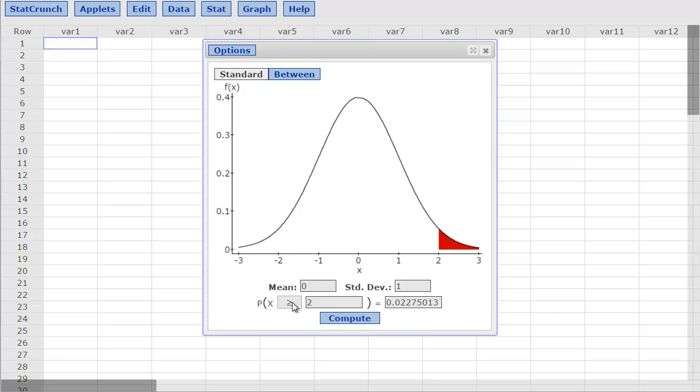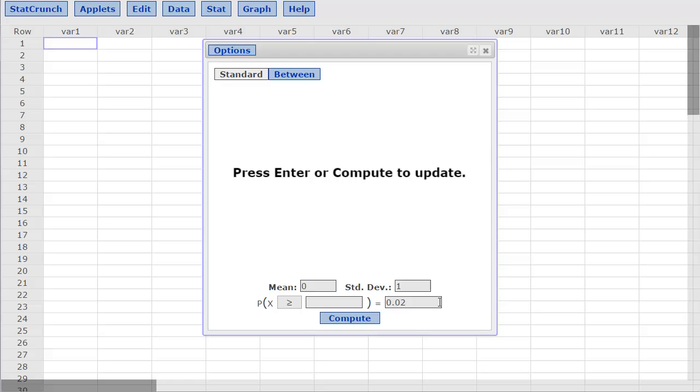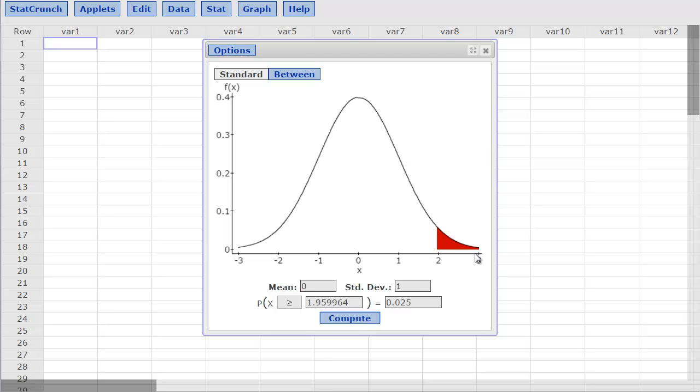I am going to leave it this way because this makes it easier for us to put in 2.5%, which is what we are looking for. Hit compute. The picture matches. We are looking for the small 2.5% above, and same thing, 1.959964, an extra digit. You can see that we get that same number all three ways: tables and both types of technology. Technology is just a little more accurate.